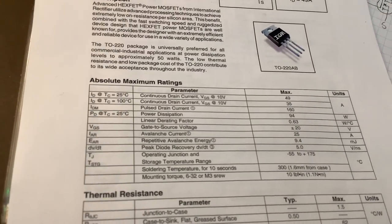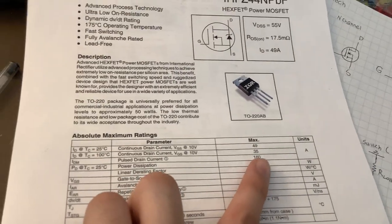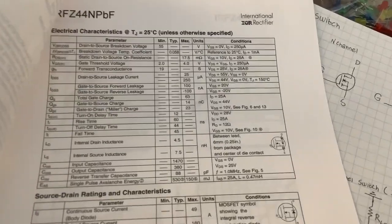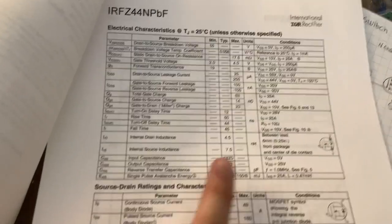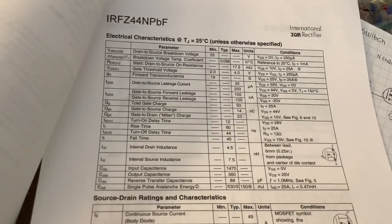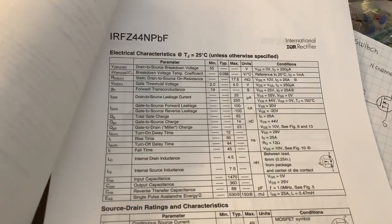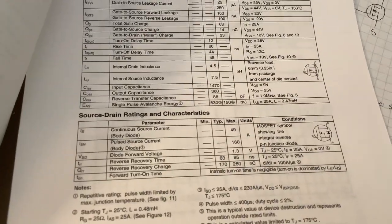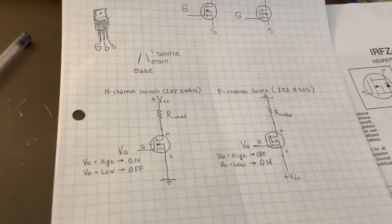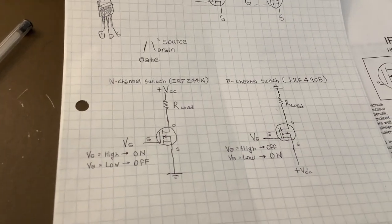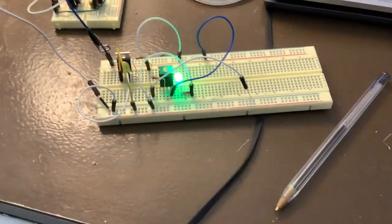Pay attention to the absolute maximum ratings in the datasheet. Note that drain current decreases as temperature rises, making cooling more important. The datasheet also details the internal capacitance and other electrical characteristics. That covers how to use a MOSFET as a switch — it can be confusing, but I hope this basic video helped you understand MOSFET circuits. See you next time.